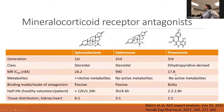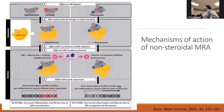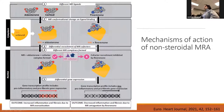There are also differences in whether these agents have active metabolites, and importantly, the binding mode is different. Finerenone is a bulky molecule, and when it binds to the mineralocorticoid receptor, it causes instability such that the cofactors we discussed cannot bind, and thus further gene transcription is inhibited. This means pro-inflammatory and pro-fibrotic gene expression is reduced.